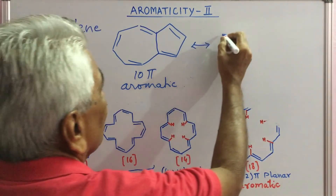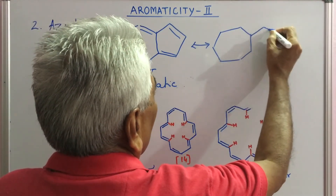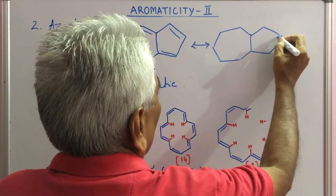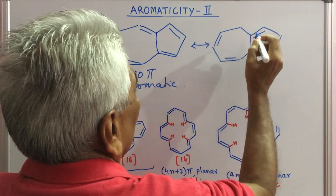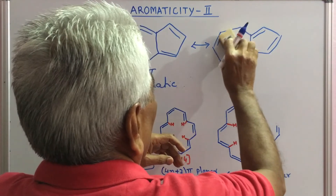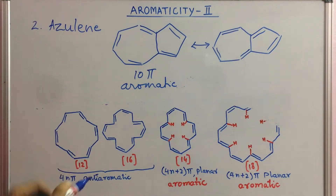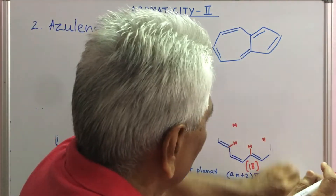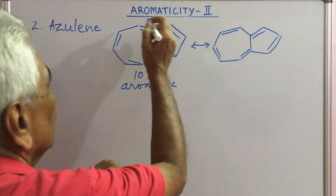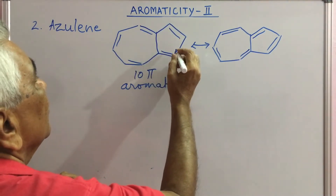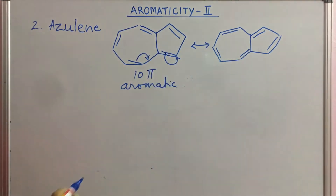Actually, azulene is the resonance hybrid of several contributing structures. There is a polarization in this molecule because of conjugation, and it is the hybrid of these resonance structures.